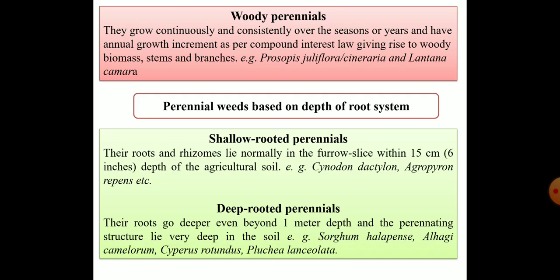The third category in this classification is woody perennials. They grow continuously and consistently over the seasons or years, with annual growth increment as per compound interest law, giving rise to woody biomass, stems, and branches. Examples include Prosopis juliflora, Prosopis cinerea, and Lantana camara.